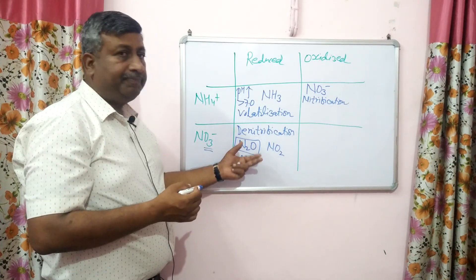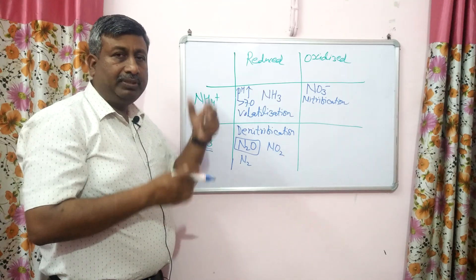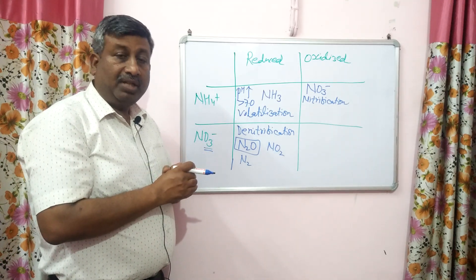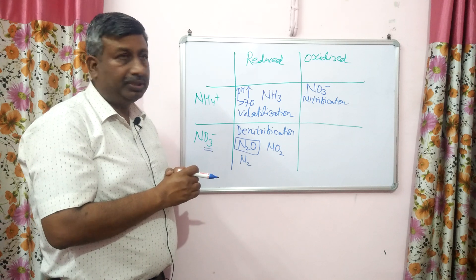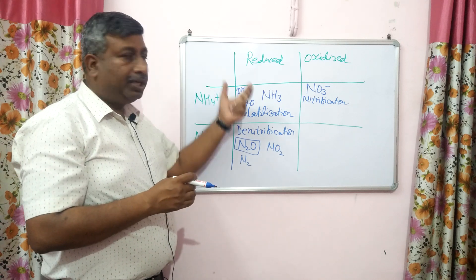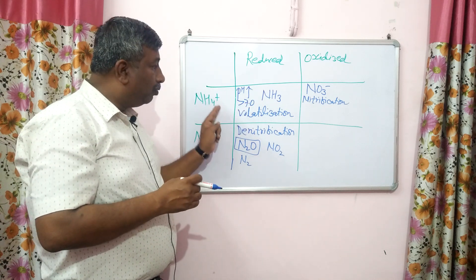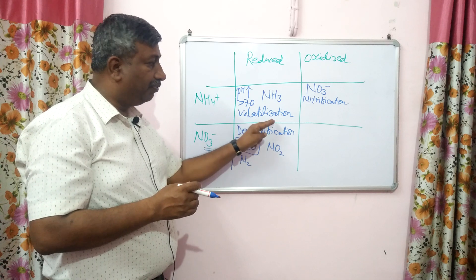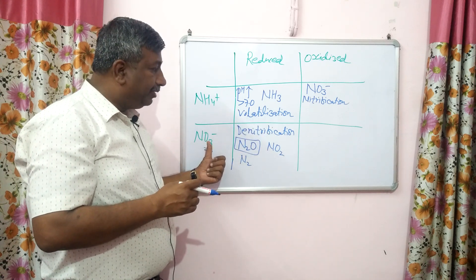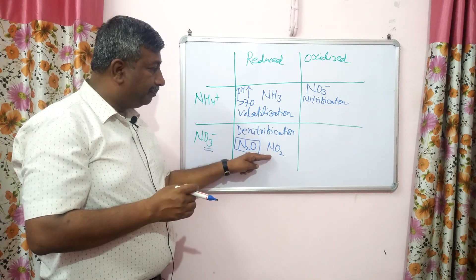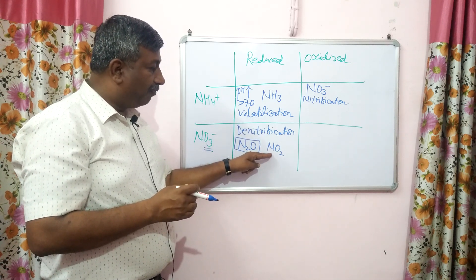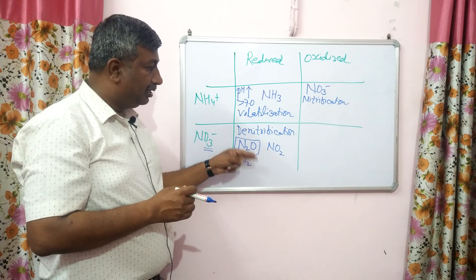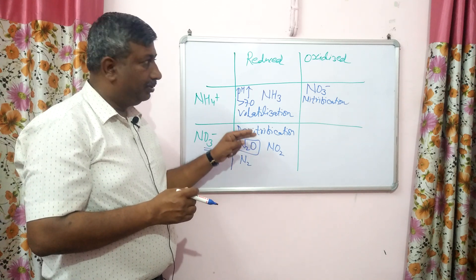These gases — N₂O, N₂, NO₂ — escape into the atmosphere. This means loss of nitrate under reduced condition. So under reduced condition, ammonium is lost as ammonia gas by volatilization, and nitrate is lost as nitrous oxide or nitrogen gas by denitrification.